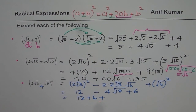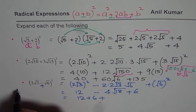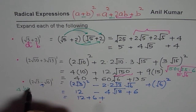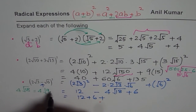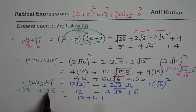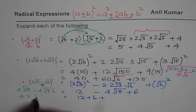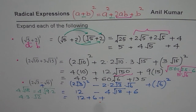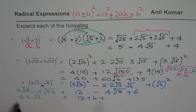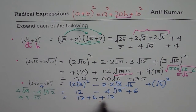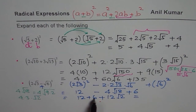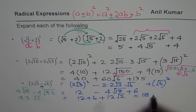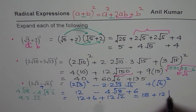Let me simplify 4√18: since 18 = 9 × 2, we have 4√(9 × 2) = 4 × 3 × √2 = 12√2. Now combining: 12 + 6 = 18, so the result is 18 - 12√2.